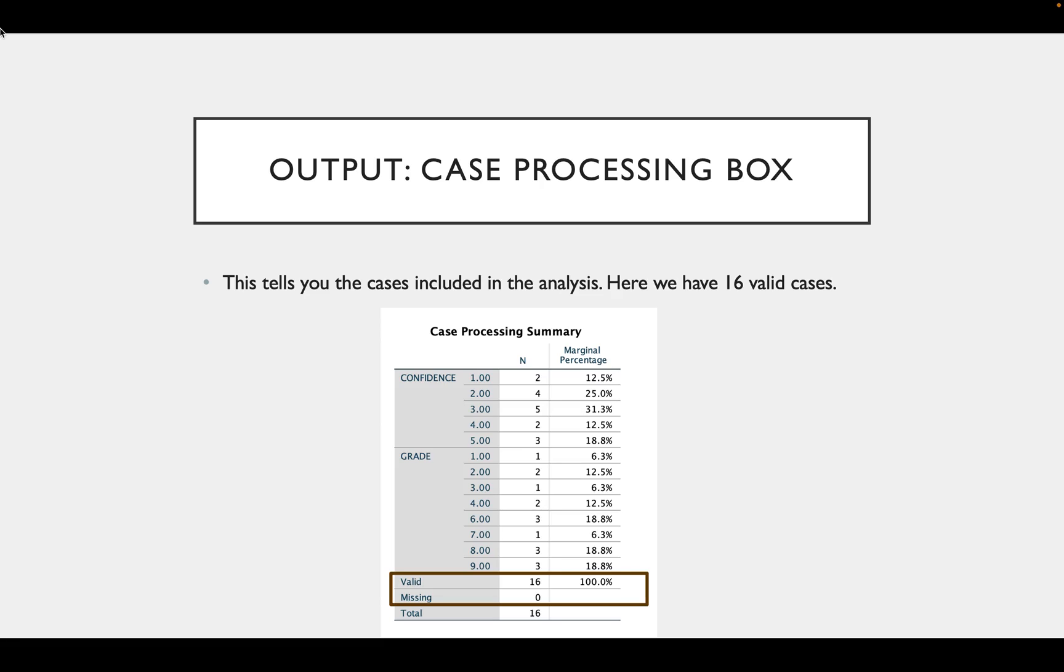So the first box you'll see is the Case Processing box. And this tells you how many cases are in the analysis. So as you can see here, we have 16 valid cases in our regression.